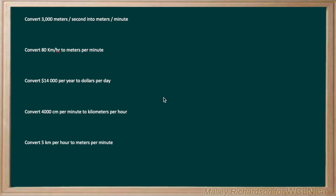These next set of questions all deal with changing units of certain rates. So let's have a look at our first example. It wants us to convert 3,000 meters per second into meters per minute. We first start off with writing what we want to convert — 3,000 meters per second — and then we want to turn it into meters per minute.